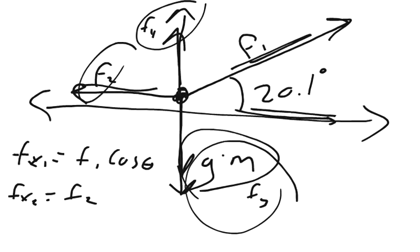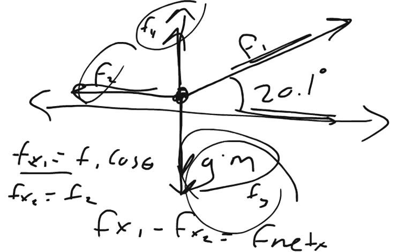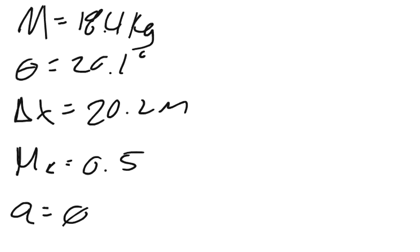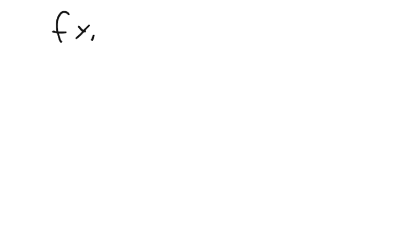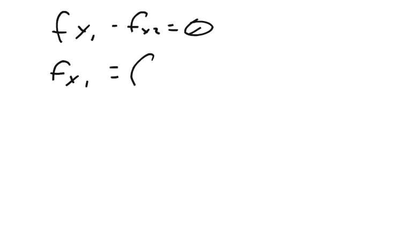We're moving in the positive direction. F of x1 minus F of x2 equals the net force of x. We know that the net force of x equals mass times acceleration, and we said acceleration is zero. So F of x1 minus F of x2 equals zero, meaning there's no net change. Therefore F of x1 equals F of x2.